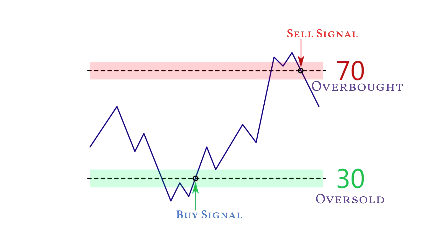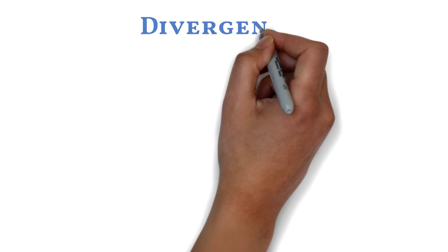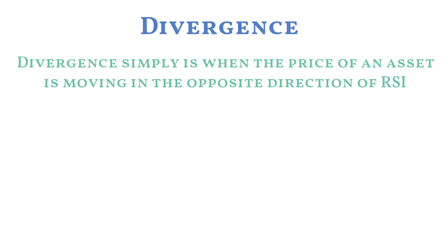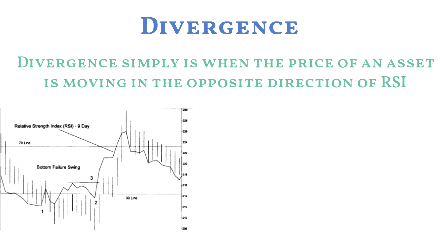Let's discuss how the indicator can be used to spot potential trend reversals. A trend reversal may be confirmed by the RSI when it shows a divergence. Divergence simply is when the price of an asset is moving in the opposite direction of RSI. For example, bullish divergence occurs when a stock moves lower but RSI makes higher lows — this means downward momentum is fading and a bullish reversal may follow. An investor might use a cross back above 30 as an entry signal.